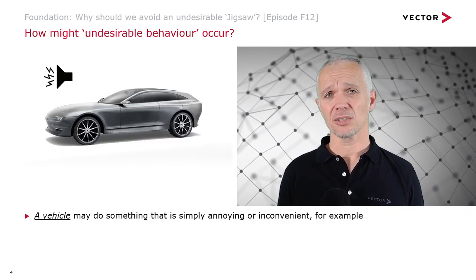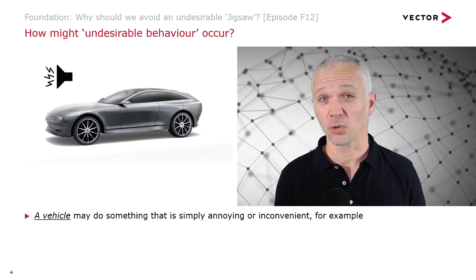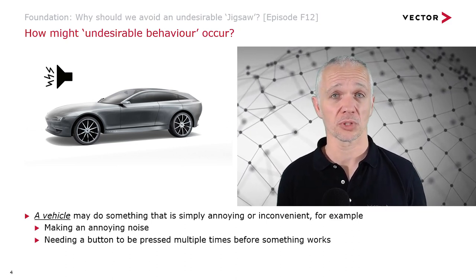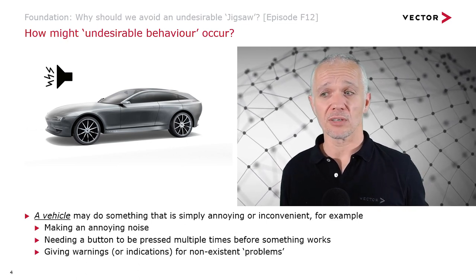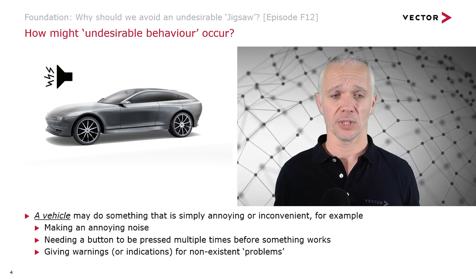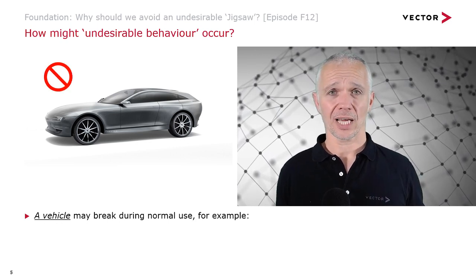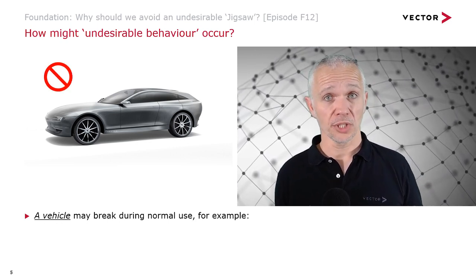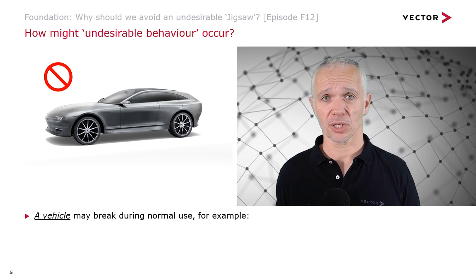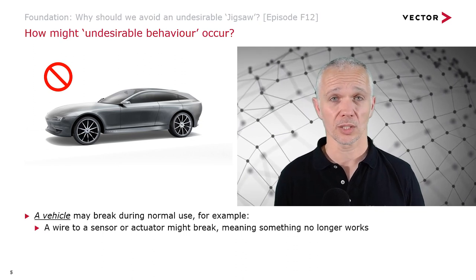With this as context, let's think about what vehicles can do. In terms of undesirable behaviour, a vehicle might do something that's simply annoying or inconvenient, such as making an annoying noise or needing a button to be pressed multiple times before something works. It could also give warnings or indications for non-existent problems. And of course a vehicle might actually break during normal use — for example, a wire to a sensor or actuator might break, meaning something will no longer work.